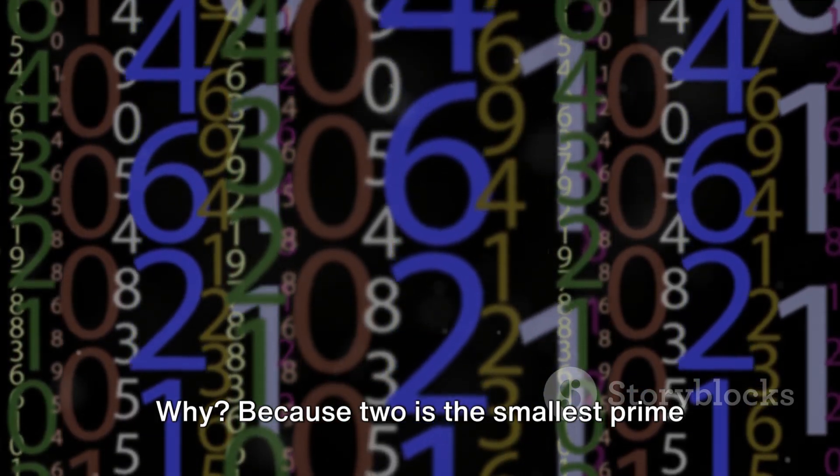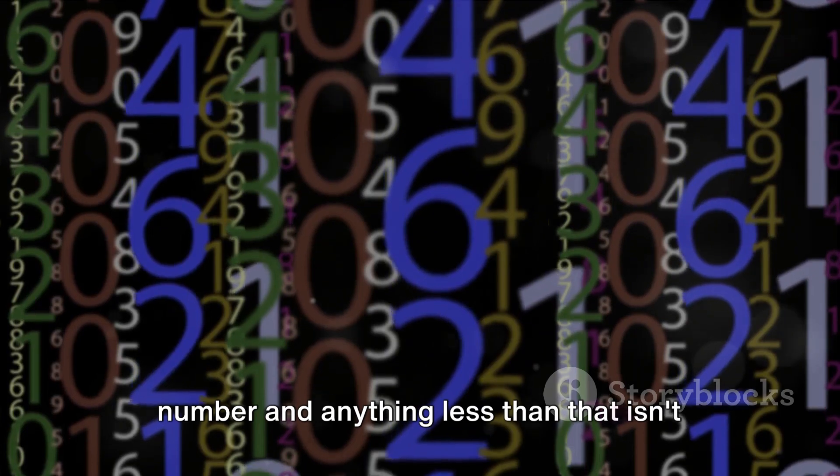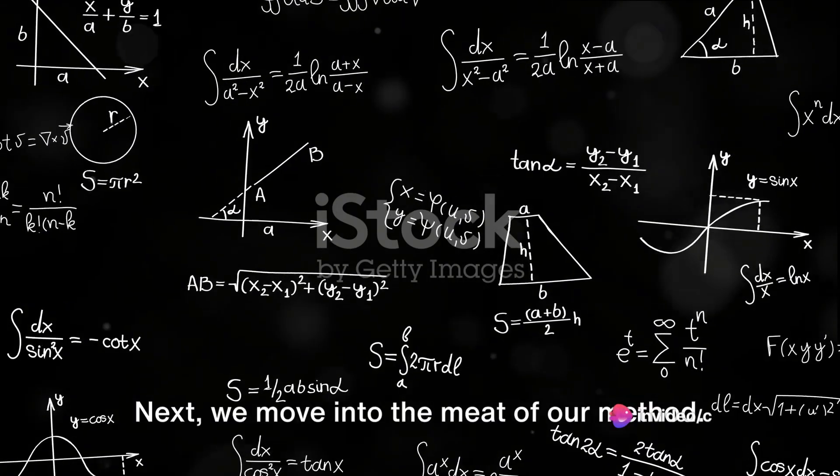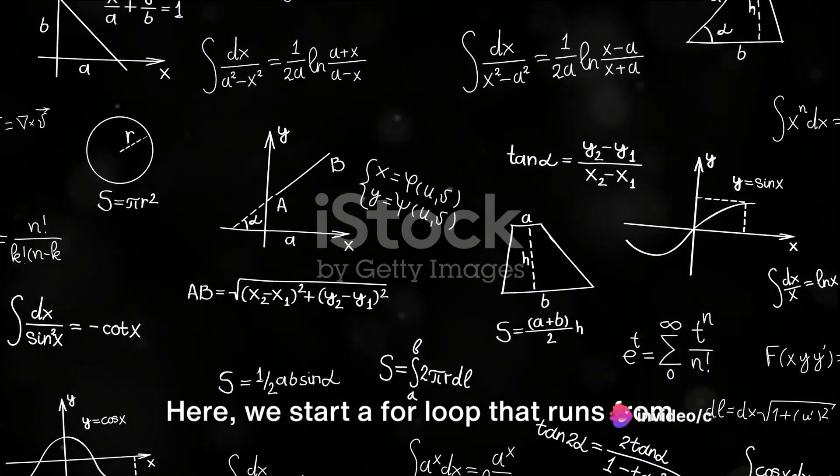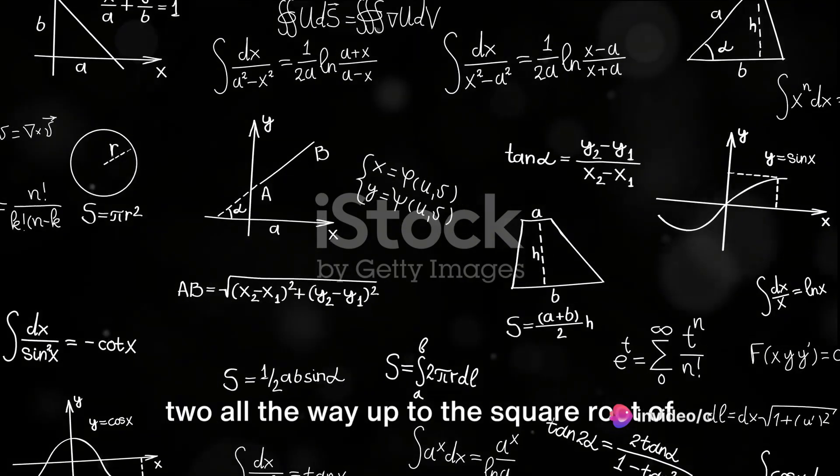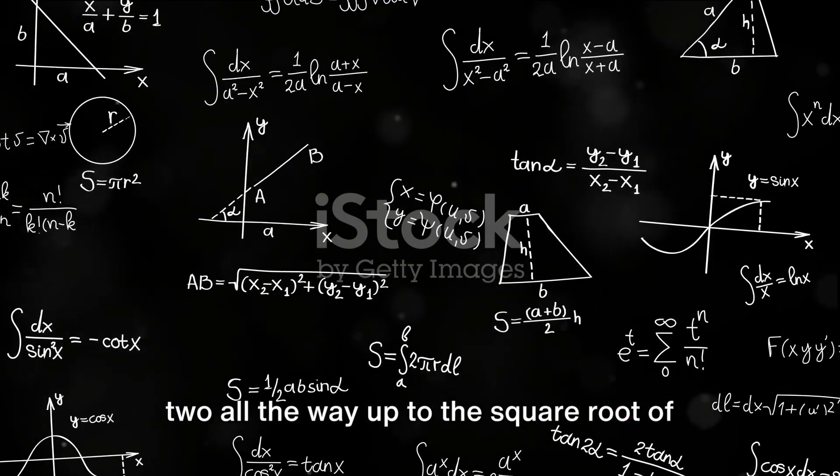Why? Because 2 is the smallest prime number and anything less than that isn't considered prime. Next, we move into the meat of our method. Here, we start a for loop that runs from 2 all the way up to the square root of the input number.